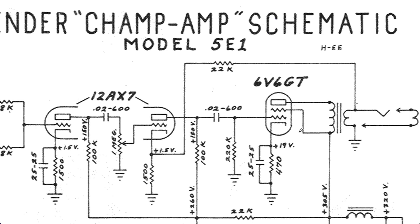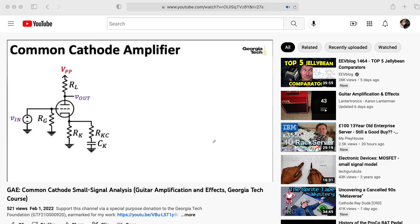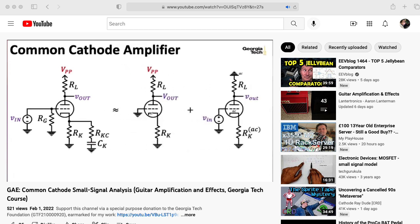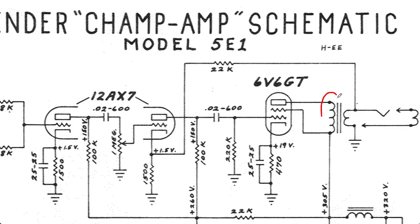So this is a common cathode amplifier, but the plate load resistor RL that we saw in previous lectures for voltage preamplifier stages is replaced by the primary of the transformer. So the plate power supply is 305 volts. And notice that in this particular design, the screen is held at the same voltage as the plate, this 305 volts, but that's not always the case in every design.